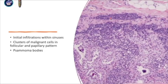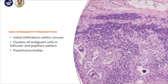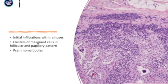What do I mean by papillary pattern? It's like a finger-like projection, and in the center you have this blood vessel. So this is the malignant cell arranged in papillary pattern. In the initial phase, usually it's infiltration within the sinus or subcapsular region. And you can see the clusters of malignant cells — here in the follicular pattern, and here you can see the papillary pattern with finger-like projections and blood vessels in the center.